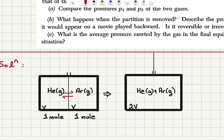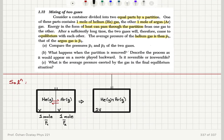And we call the average pressure of the helium gas P1 bar, and the average pressure of the argon gas P2 bar, when the system reaches equilibrium. Then the partition is removed so that the total volume will become 2V.